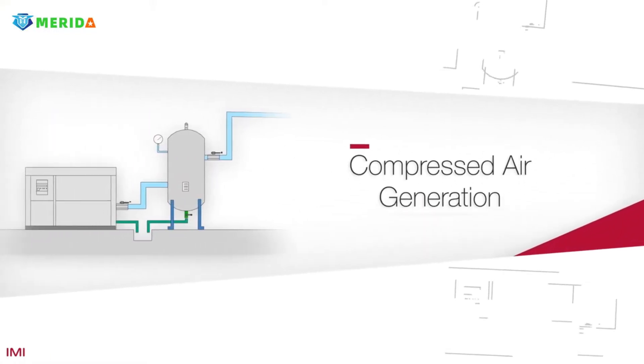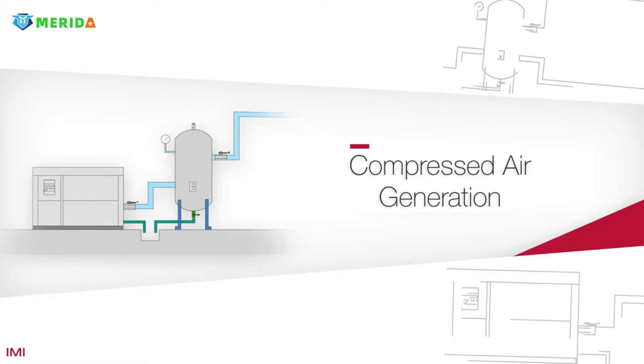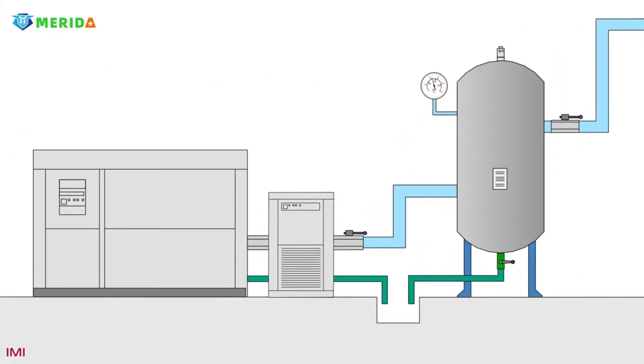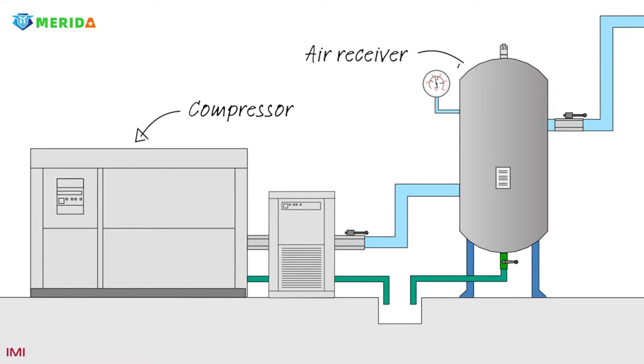Let's have a look at how compressed air is generated. Here is a typical setup, although in reality the compressor is usually sited in its own compressor house to isolate the noise and heat. In some systems there may also be a dryer fitted just after the compressor.